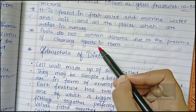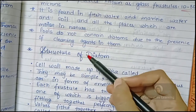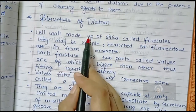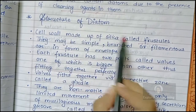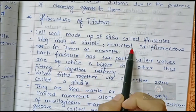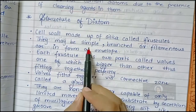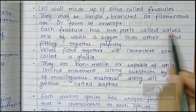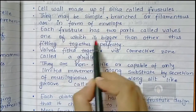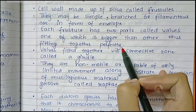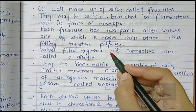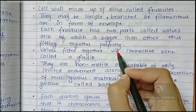Regarding the structure of diatoms, the cell wall is made up of silica, and this silica-made cell wall is known as the frustule. They may be simple, branched, or filamentous in nature, or in the form of an envelope. The frustule has two parts — two portions known as walls of the frustule, one of which is bigger than the other, and they fit together.